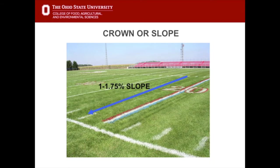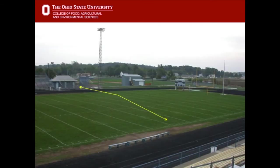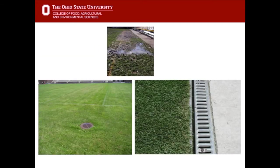What we do to improve native soil is to put a crown or slope on it, so the middle of the field is anywhere from 12 to 18 inches higher than the sidelines, which would be a 1 to 1.75 percent slope from the middle to the sideline. Ideally, water that collects on the sideline would be taken away. Water doesn't move sideways — it just moves from the crown to the sideline — so it has to be intercepted all the way along the sideline, which is the type of drain you see on the right-hand side.